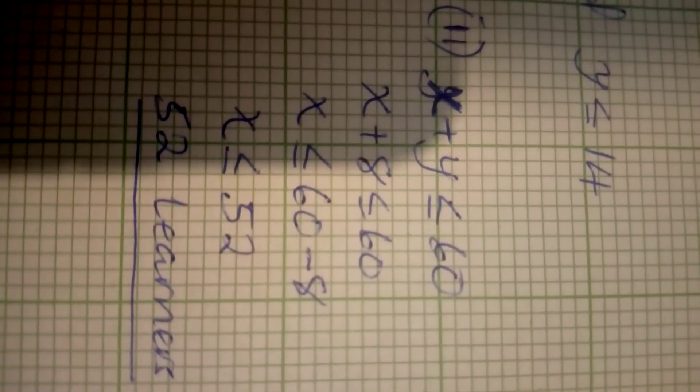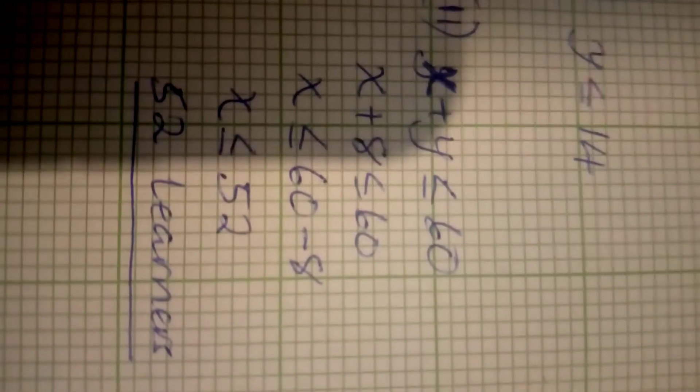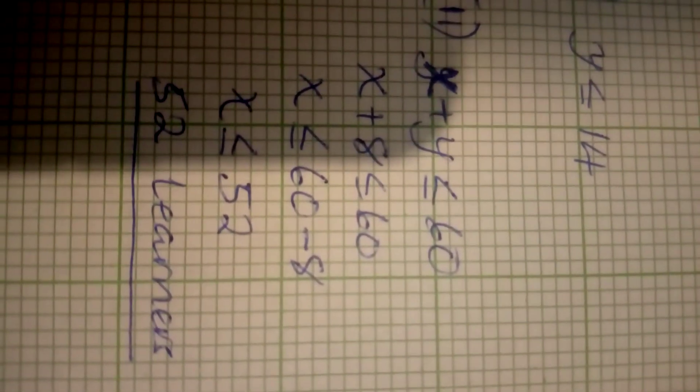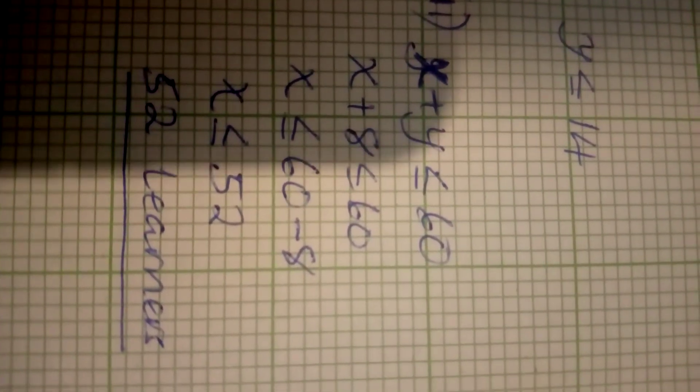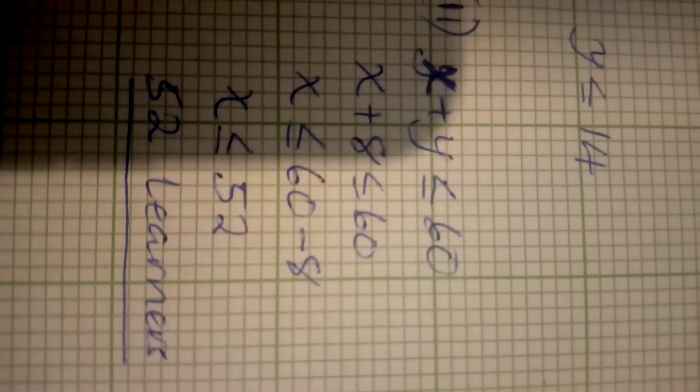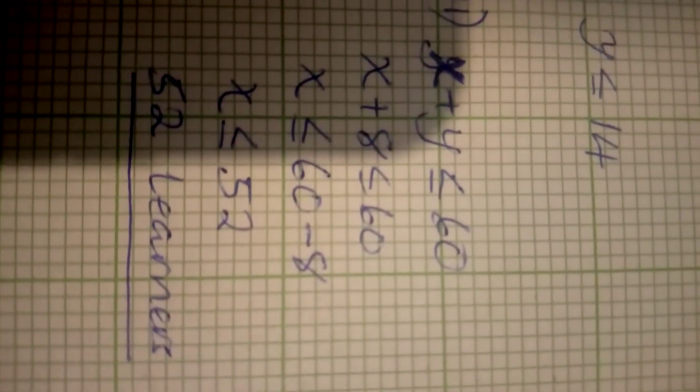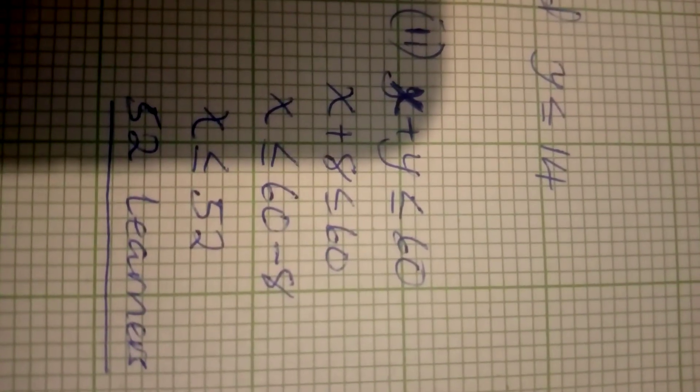So if we work this equation out, x plus y less than or equal to 60, we'll find that 52 will be learners. And that will be the answer for C2. Let's go to the last question.